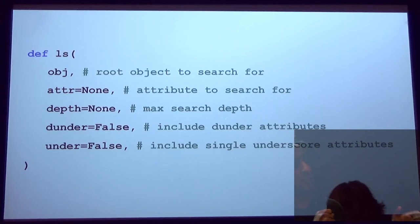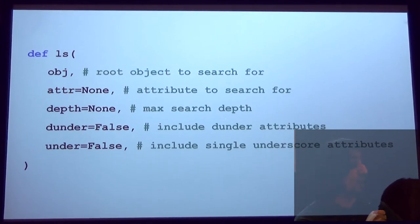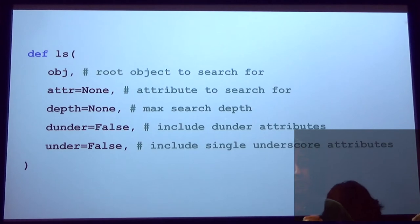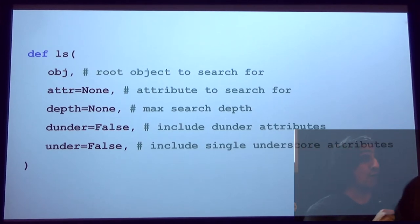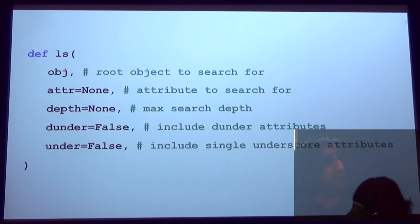So just going into this a little bit deeper. So you can pass in the object. You can search for attributes. You can decide how far you want to go for your max depth. If you want to see the dunder methods or the single underscore methods, there are also flags you can pass in to do that.